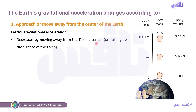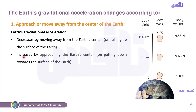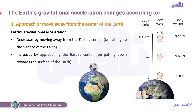كل ما بتبعد عن center of the earth كل ما الويت بتاعك بيحصل له ايه؟ الrelation هنا inverse proportional. On raising up the surface of the earth — يعني لو انت مثلاً مسافر وراكب طيارة وبعدت عن center of the earth يبقى الويت بتاعتك will decrease. But it increases by approaching the earth's center — on getting down towards the surface of the earth كل ما قربت كل ما الويت هيبقى أكبر.